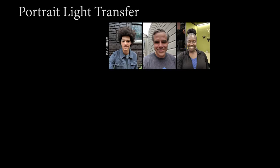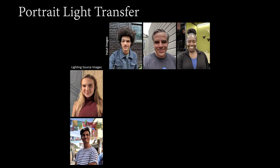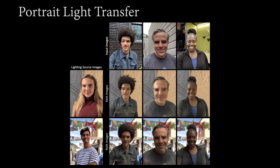But what if you don't have a lighting environment? First, we show one possibility, which is portrait lighting transfer. Given three input portraits and two new portraits to use as light sources, we estimate the illumination from the source images using a portrait-based lighting estimation technique. Then we can relight and composite the original subjects into these same scenes as before.